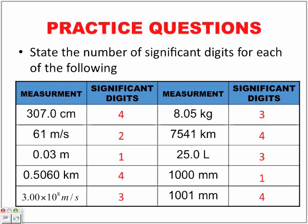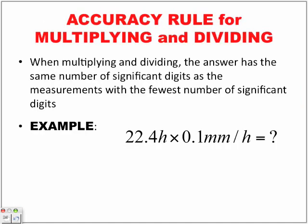Let's look at the accuracy rule for multiplying and dividing. Remember, any time you are multiplying and dividing, a lot of times your teacher will say round to the nearest tenth or thousand. In this physics course, what you're going to be responsible to do is figure out how many digits you need to have in your answer if you have a long list of numbers in your calculator.